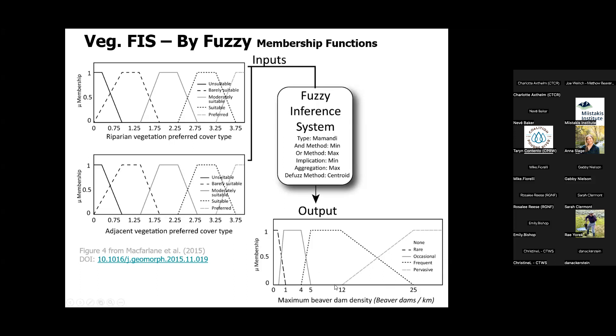Based on just the vegetation, these would be the outputs. 'Frequent' would have a little overlap up to 12 dams, but would go all the way out to 40 dams.